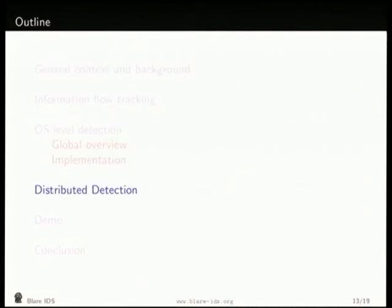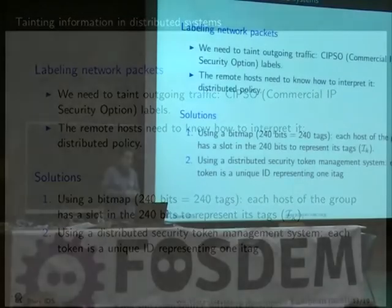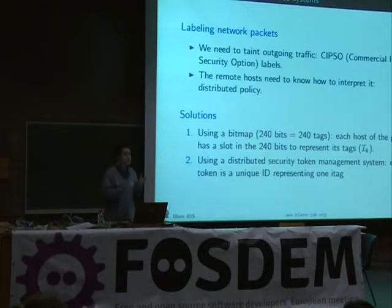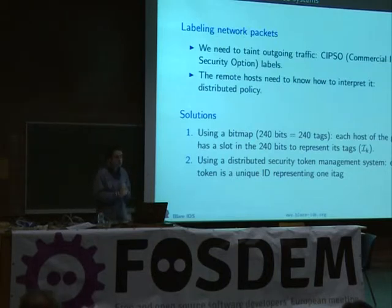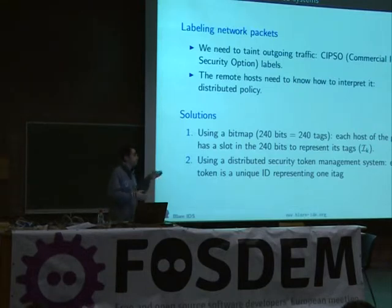That's great on one host, but Blair can actually work as a distributed OS-based intrusion detection system. We label network packets using commercial IP security options. We label the packets, and when the other OS receives them, it reads the labels and applies the information tags. Both systems need to run Blair. Right now we have 230 bits available and we're using them naively — each bit represents one tag — which is fine for simulations, but we really need a distributed security token management system to support more than 240 tags. That second part hasn't been implemented yet.